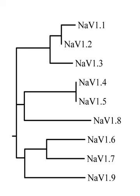The alpha subunit has four repeat domains, labeled I through IV, each containing six membrane-spanning segments, labeled S1 through S6. The highly conserved S4 segment acts as the channel's voltage sensor. The voltage sensitivity of this channel is due to positive amino acids located at every third position. When stimulated by a change in transmembrane voltage, this segment moves toward the extracellular side of the cell membrane, allowing the channel to become permeable to ions.